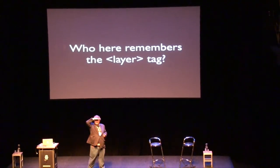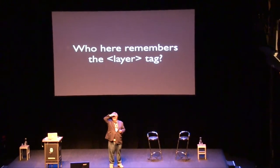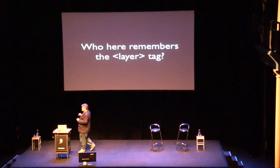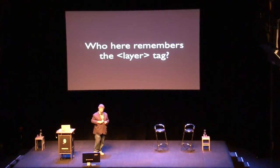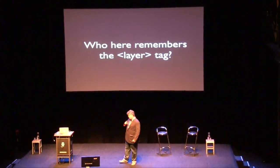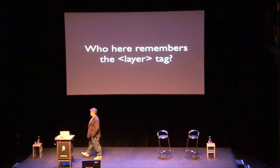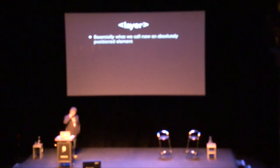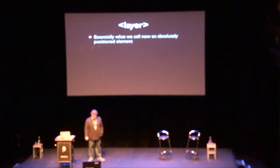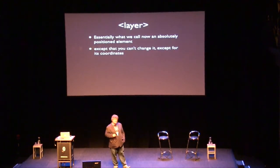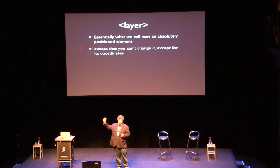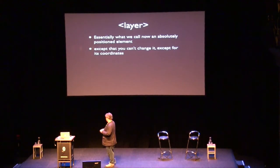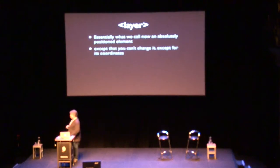Who here has actually worked with the Leia tag back in the day? A few. Explain to youngsters what they missed, because they missed a lot. This was the day of Netscape 4. If you're complaining about browsers today, you don't even remember Netscape 4. Leia, back then, was basically what we now call an absolutely positioned element, although Netscape decided to do it differently. You could only change its position — that was called DHTML back in the day — and you could move an element from left to right or top to bottom over the screen. That was wonderful back then, because we didn't have such a thing yet.